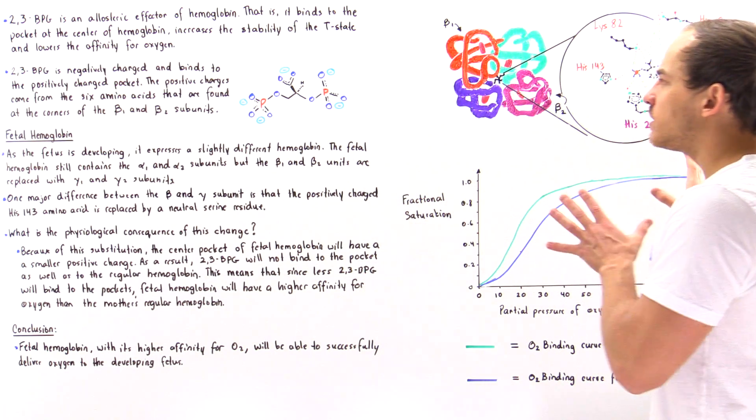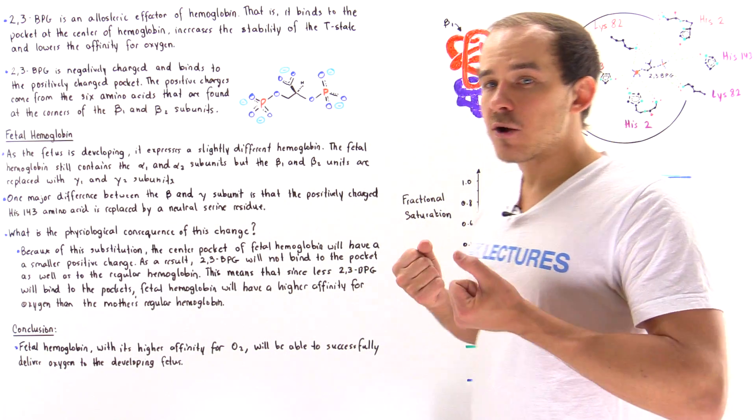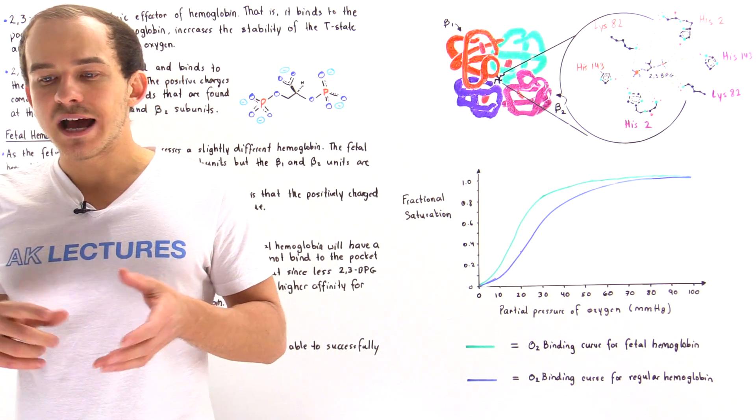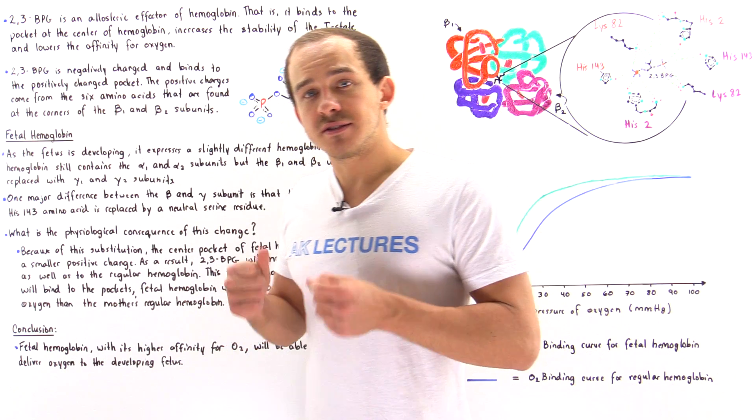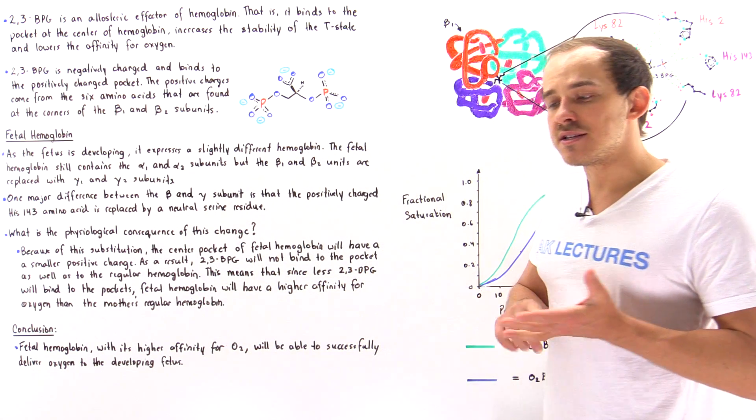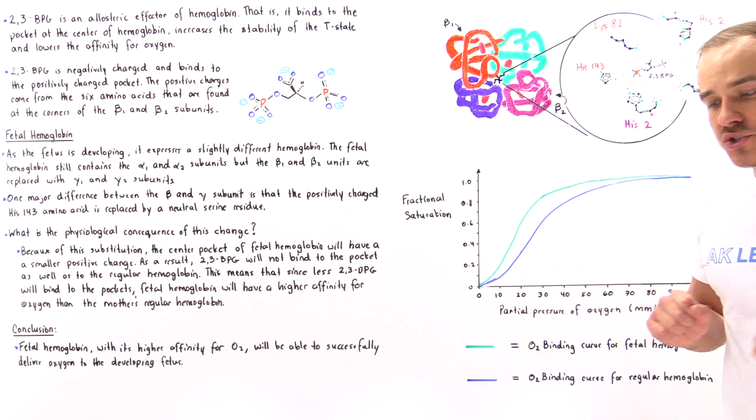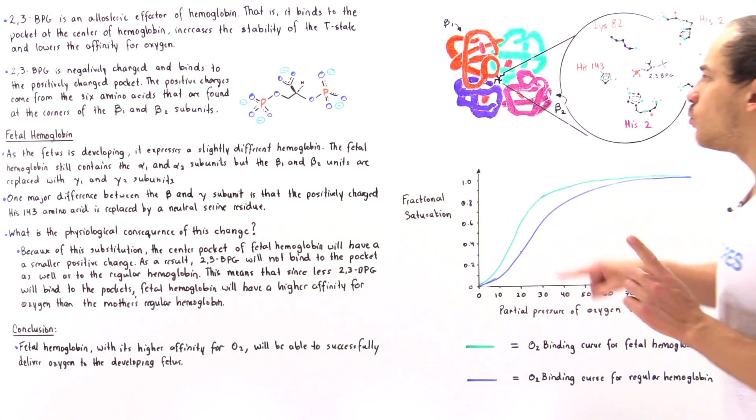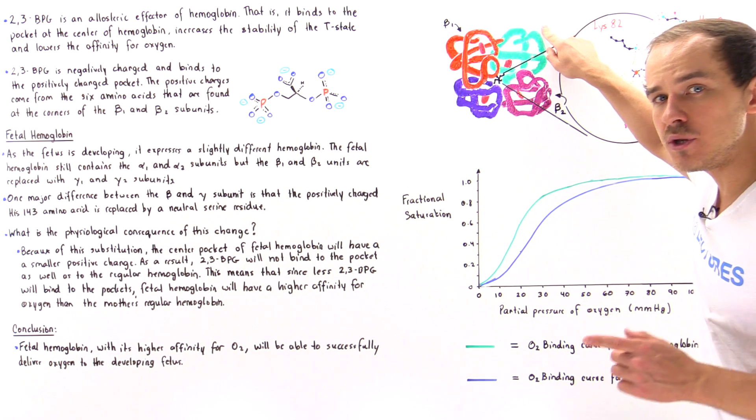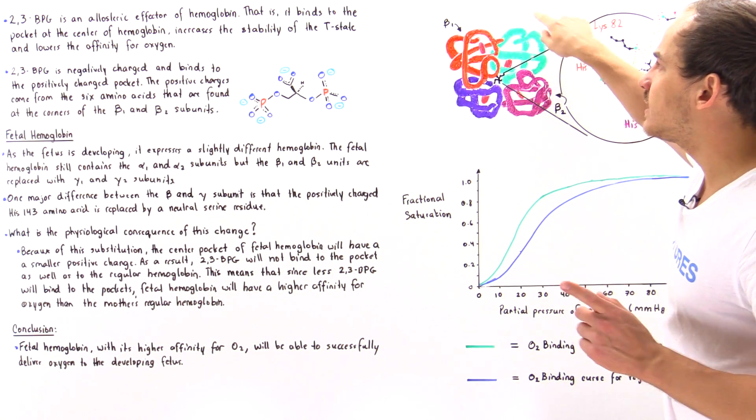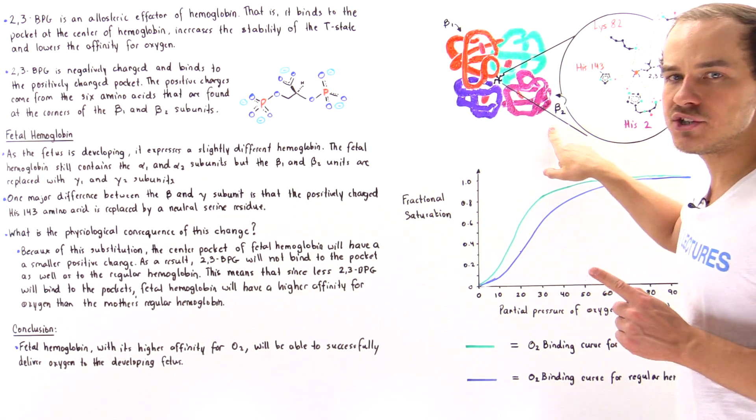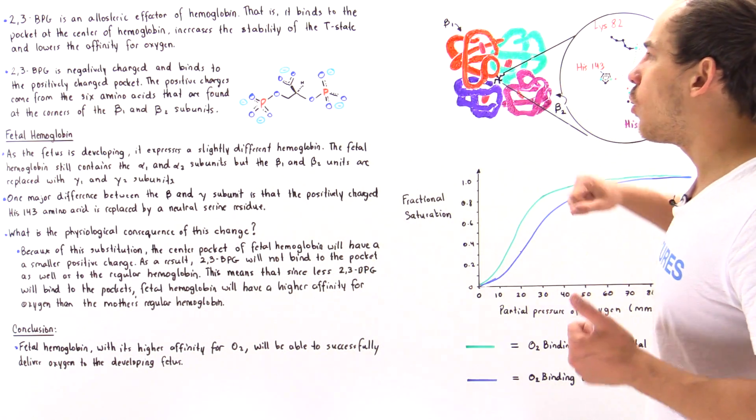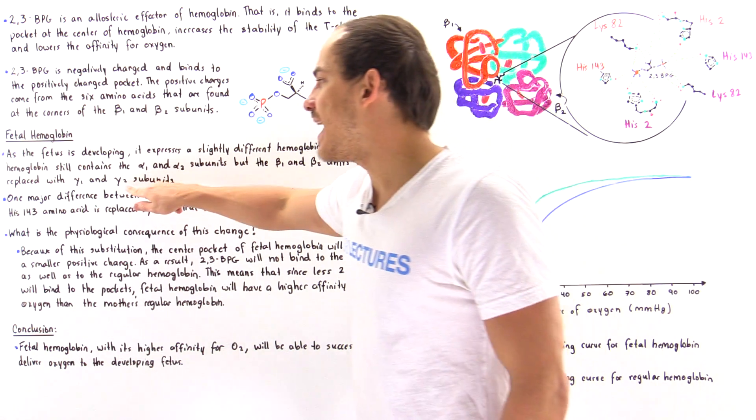This is normal hemoglobin that is found in our bodies. But when the fetus is developing inside the mother, the gene that expresses the hemoglobin expresses a slightly different hemoglobin. The fetal hemoglobin molecule contains the alpha-1 and alpha-2 subunits, but it does not contain beta-1 and beta-2. Instead, it contains gamma-1 and gamma-2 subunits.